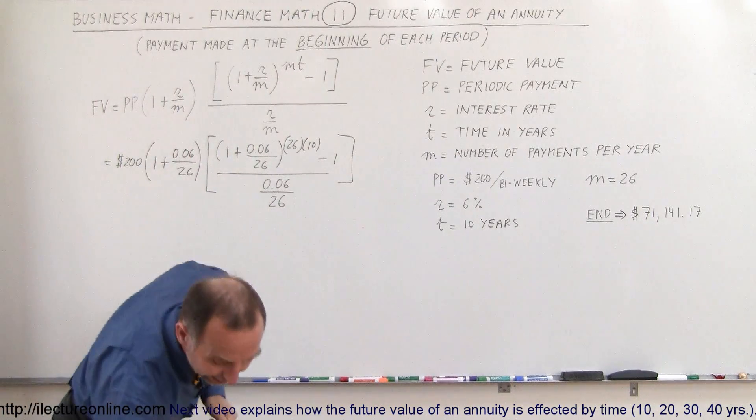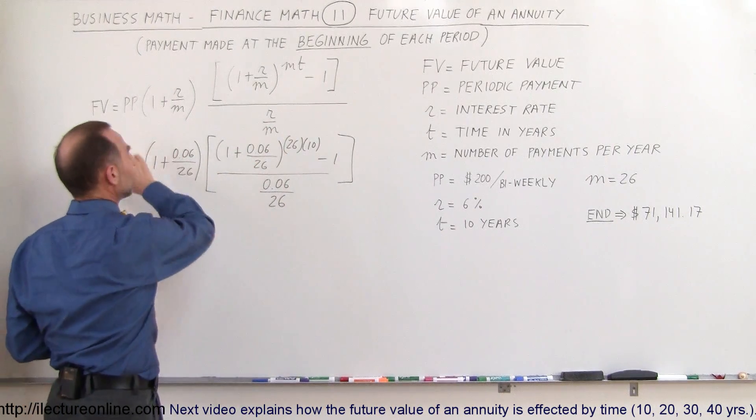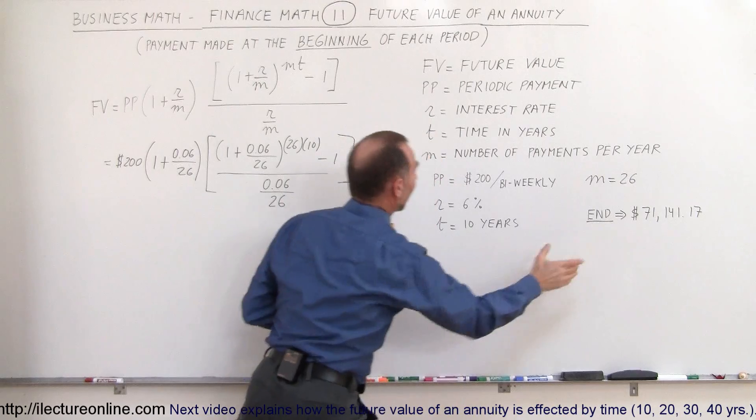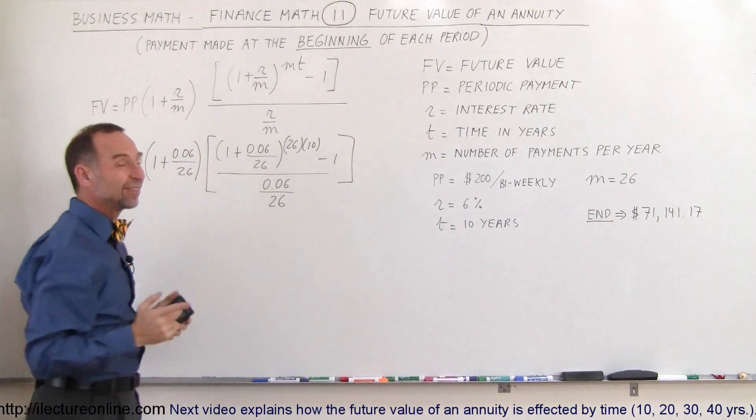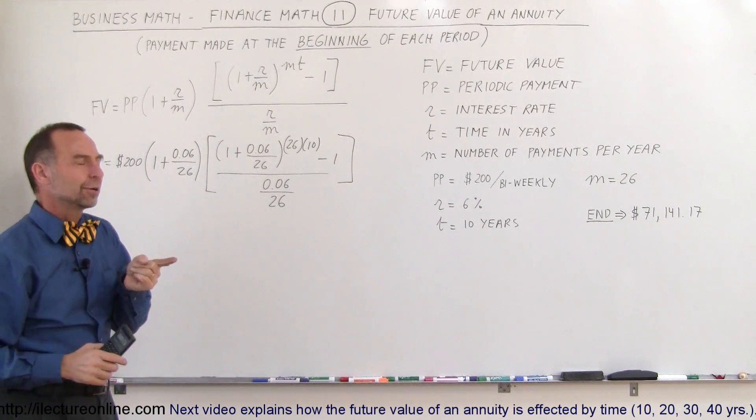But just for practice, let's go ahead and do the whole thing again. So we're going to multiply this times this. We should get this number right there. And then we'll multiply times this quantity because that's the difference between paying at the beginning of the period versus paying at the end of the period.